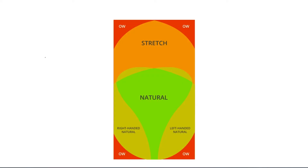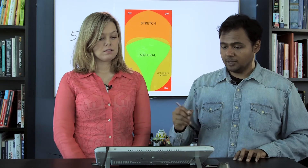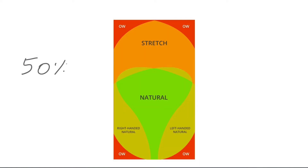That brings us to something called the out zone. Here are some interesting statistics: 50% of smartphone usage occurs with a single hand. This diagram is really important to keep in mind when you're building applications. The red areas are the ones you should avoid — they're called the out zones. What you really want to reach for is the green area, which is the touch zone. If you put actions, buttons, or any kind of interaction in that area, it'll make your application much easier to use with a single hand.